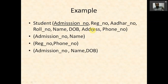We have seen functional dependencies and definitions of keys. The key concepts to understand are: super key, key, candidate key, secondary key, prime attribute, and non-prime attribute. In the student table, non-prime attributes are name, date of birth, address, and phone number, while admission number, register number, Aadhar number, and roll number are all prime attributes. Thank you.